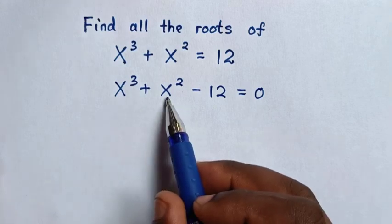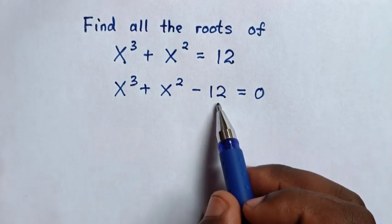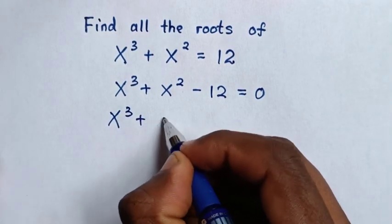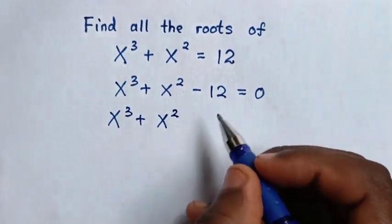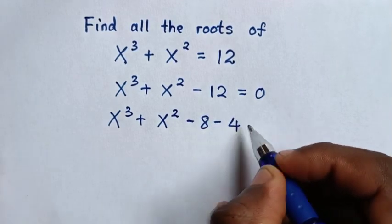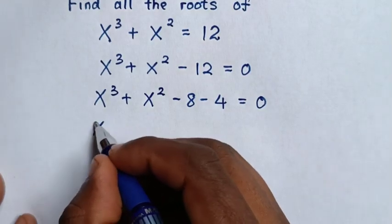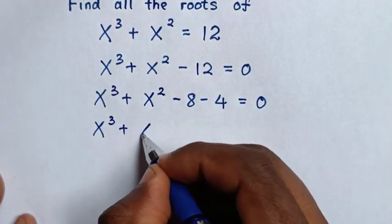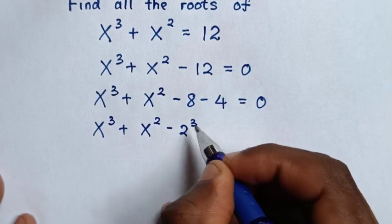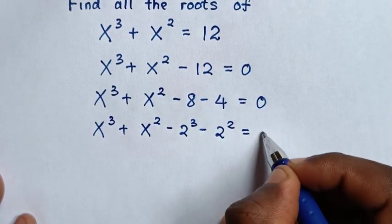As we have two terms here, we split negative 12 into two terms: negative 8 and negative 4. So it will be x³ + x² - 8 - 4 = 0. Then, negative 8 is the same as 2³, and negative 4 is the same as 2², so it becomes x³ + x² - 2³ - 2² = 0.